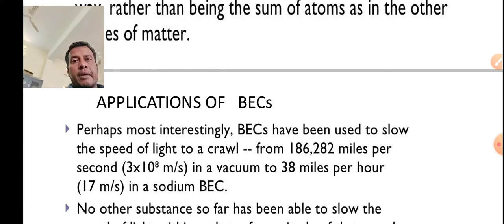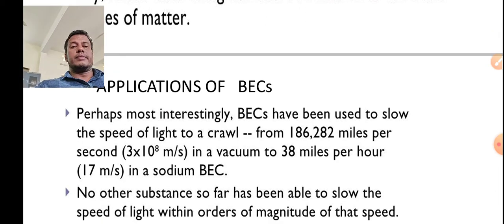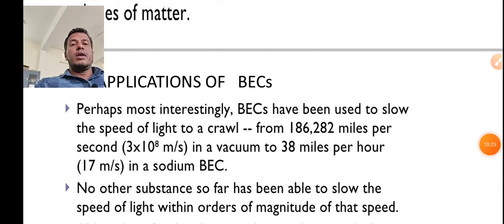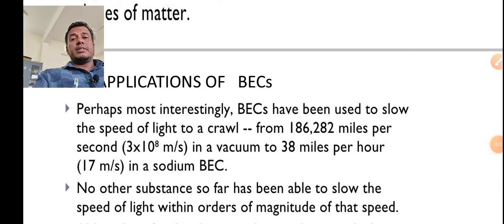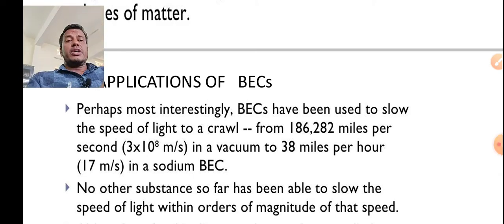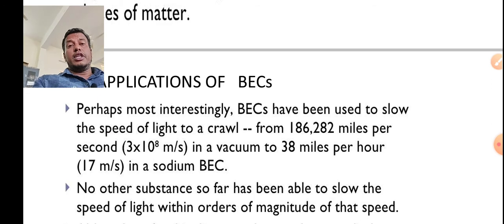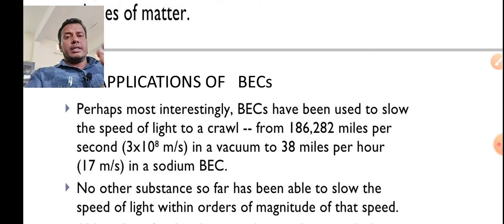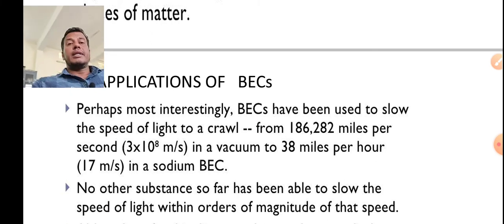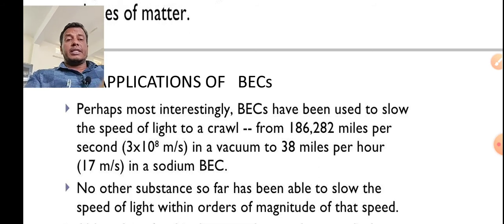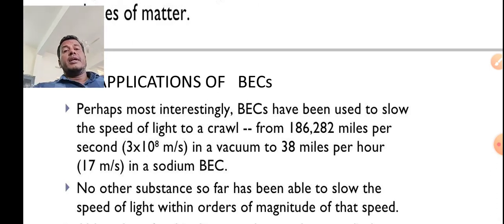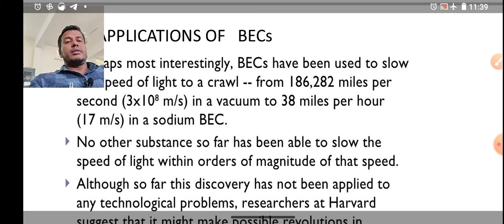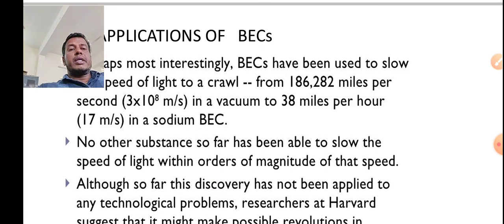What are the applications of BEC? A very important application is reducing the velocity of light—it makes light crawl. The nature of BEC condensation diminishes the velocity of light from 186,000 miles per second to 38 miles per hour. It is a very good thing, how to reduce using BEC. No other substance has been able to slow down the speed of light with this order of magnitude.